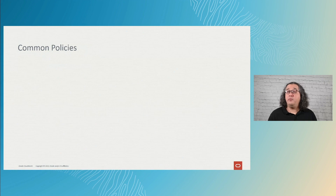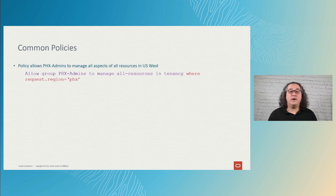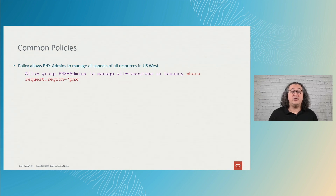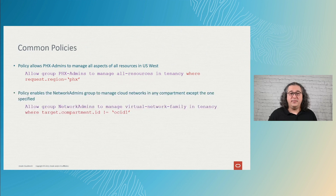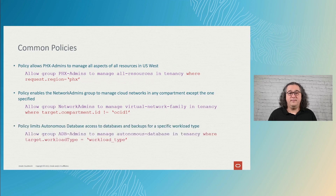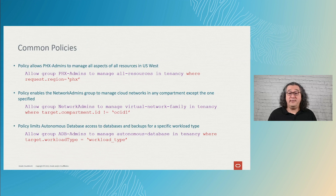Let's look at a few more examples showing how the 'where' and condition clauses can be applied. Here, the 'where' clause with the condition 'request.region equals Phoenix' will limit the Phoenix admins to manage all resources only in the US West region. The next policy uses a condition where the target compartment must be different from the specified one — be sure to replace 'OCID1' with a valid compartment OCID. The last policy defines a condition limiting the type of workload set on the database — replace workload type with a valid value like OLTP, DW, or JSON.